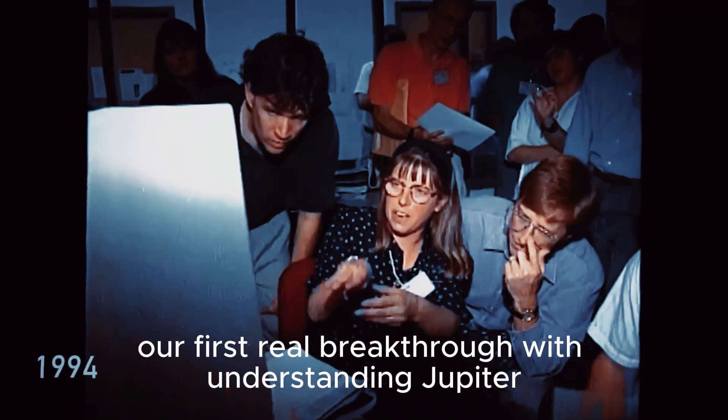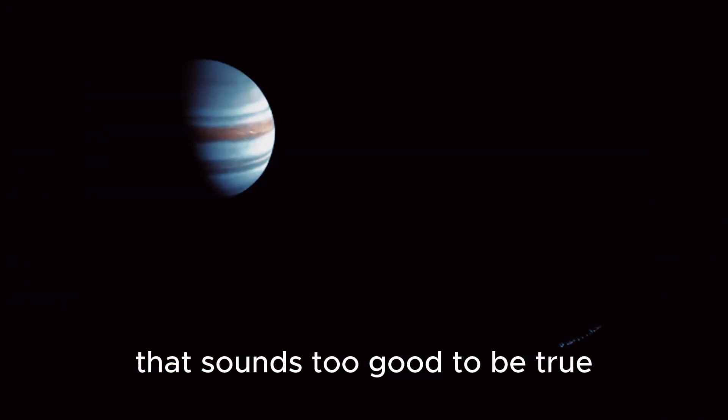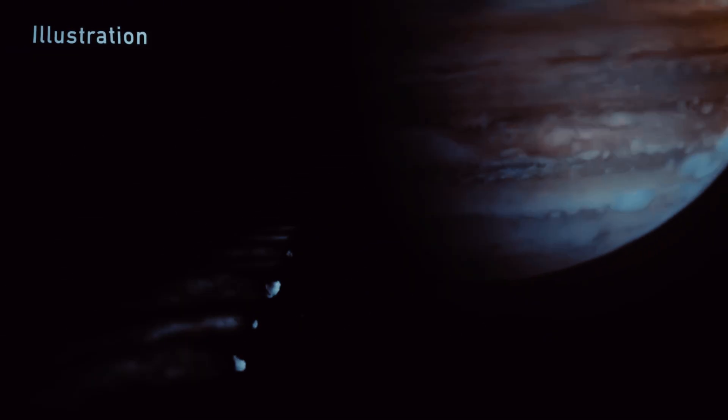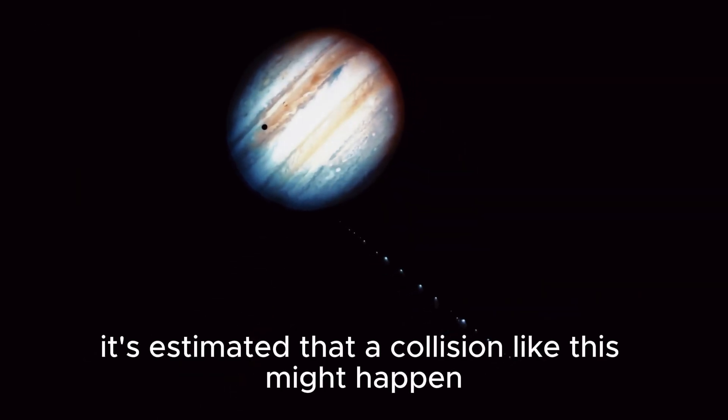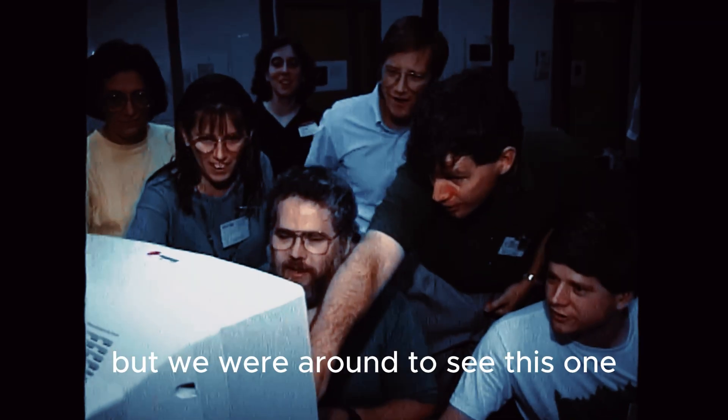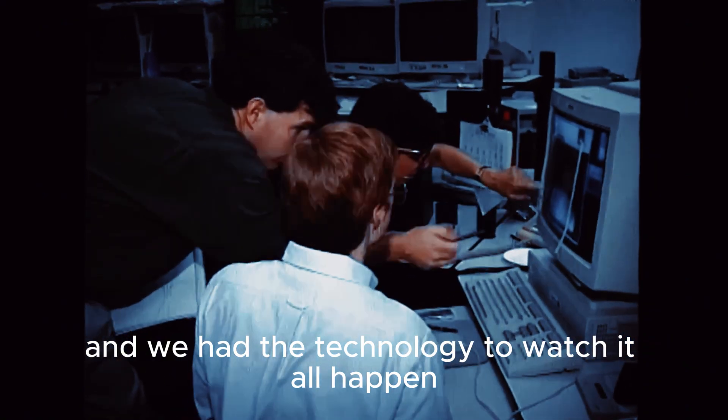Our first real breakthrough with understanding Jupiter came in the mid-1990s. And this is one of those insane coincidences that sounds too good to be true. But in July 1995, the planet was hit by a comet. This is not a common thing. It's estimated that a collision like this might happen once every 6,000 years. But we were around to see this one, and we had the technology to watch it all happen.